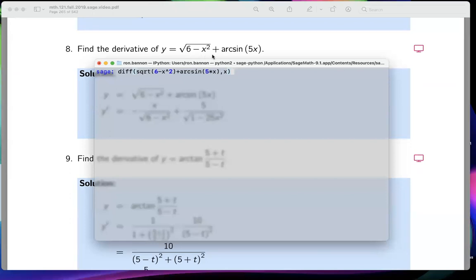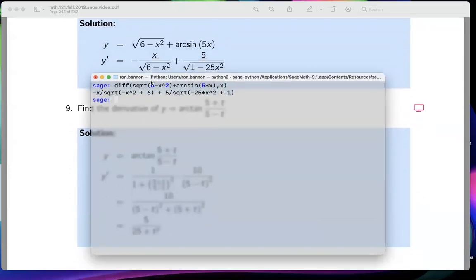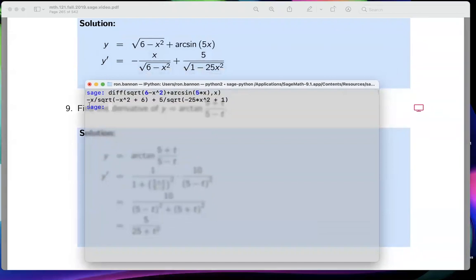So differentiate this guy over here - square root of six minus x squared plus the arc sine. Again what are we doing? We're just learning how to use Sage, not that this is useful, it's not at this point because this is something I should be able to do by hand. But I'll just type that in there and what do we get? Well if you look at it we're getting the same answer - minus x over the square root of six minus x squared, I see that, plus five over the square root of one minus 25 x squared.